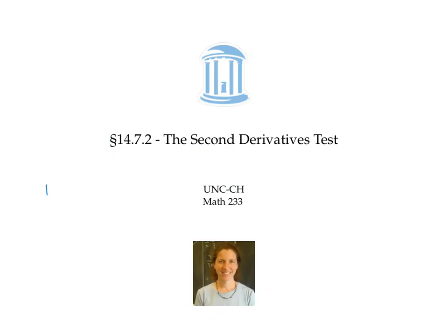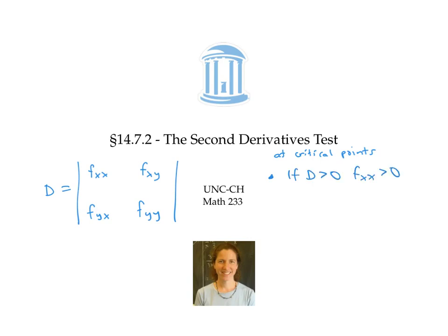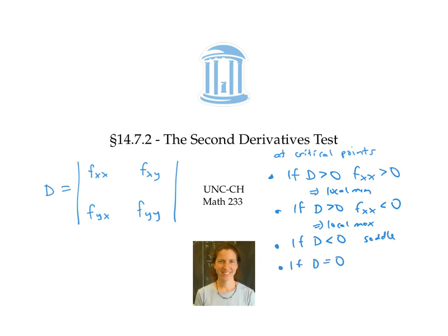The second derivatives test uses the discriminant to help determine the features of a graph at critical points according to the following rules: if the discriminant is positive and f sub x,x is positive, then we have a local min; if the discriminant is positive and f sub x,x is negative, then we have a local max; if the discriminant is less than zero, then we have a saddle; and if the discriminant equals zero, then the test is inconclusive.